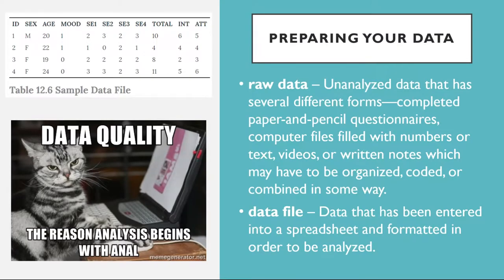Prepare your data for analysis. Whether your raw data are on paper or in a computer file, or both, there are a few things you should do before you begin analyzing them. First, be sure that they don't include any information that might identify individual participants, and be sure that you have a secure location where you can store the data, and a separate secure location where you can store any consent forms. Unless the data are highly sensitive, a locked room or a password-protected computer is usually good enough. It's also a good idea to make photocopies or backup files of your data and store them in yet another secure location, at least until the project is complete.